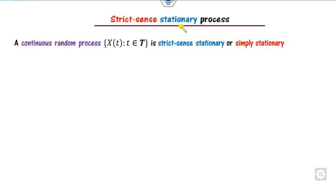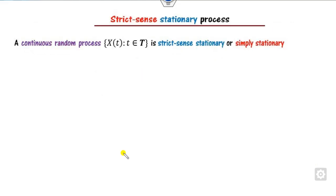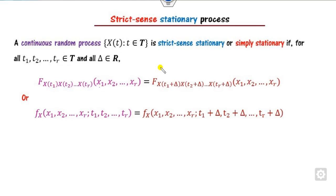For the strict sense stationary process: if there is only one variable x, this is called the first-order stationary process. If you consider two variables x₁ and x₂, it is called the second-order stationary process. In general, if you consider r variables, it is called the r-th order stationary process. The definition is the same — if you consider the r-th order, the CDF or PDF must be the same under time shift.